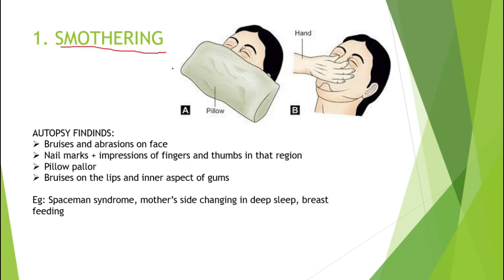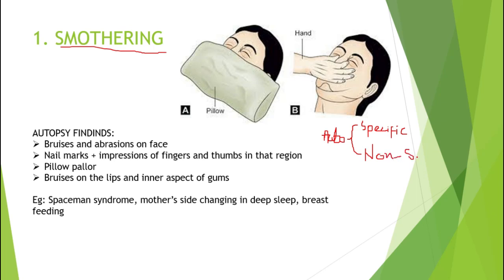Smothering, as the picture displays, is the closing of the nose and mouth by mechanical means. The closing of the nose and mouth can lead to certain specific autopsy findings — findings that help us predict the cause of death was smothering. Autopsy findings in asphyxia-related deaths can be divided into two categories: specific findings and non-specific findings, which are found in each and every type of asphyxia.